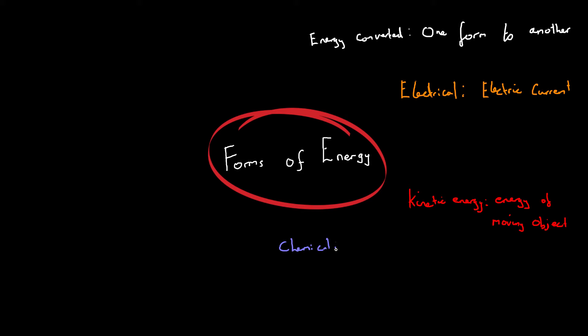Our muscles get energy from another type: from our food, we've stored chemical energy. Chemical energy is the energy stored in fuels. Our food is a fuel — it allows us to carry out movement and other things we need to do to survive. Our bodies will actually burn it, and the energy is released when it's burnt. For example, at a power station or in a car engine, the energy is released and converted into movement because the fuel has been burnt.